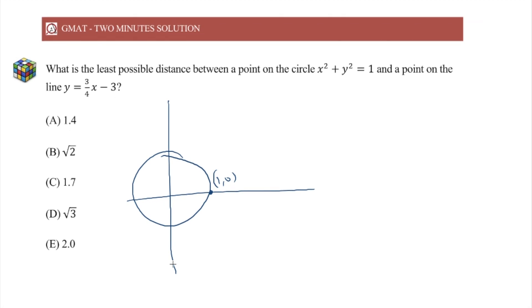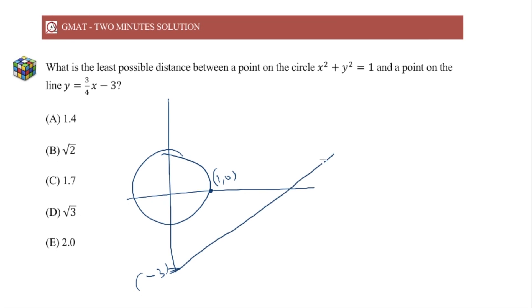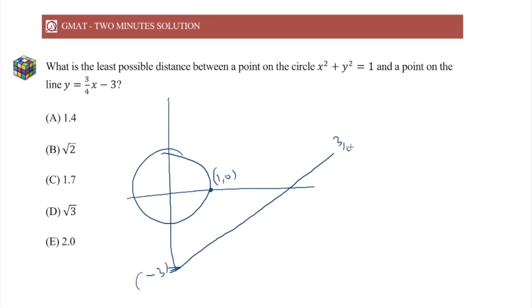And line, we have y-intercept of the line is minus 3 and the slope is 3 by 4, so this is what the line will look like.